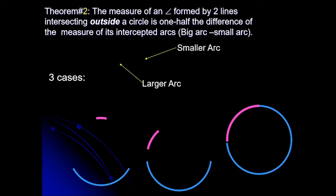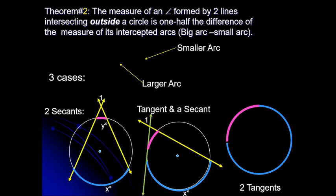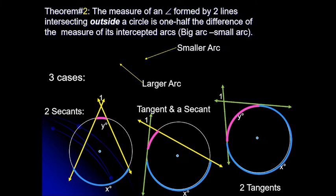Aside from Theorem 1, we can also use Theorem 2 to solve for angles formed outside the circle. Theorem 2 states that the measure of an angle formed by two lines intersecting outside the circle is one-half the difference of the measures of its intercepted arcs — the big arc minus the small arc. There are three cases: the angle formed by two secants, the angle formed by a tangent and a secant, and the angle formed by two tangents.